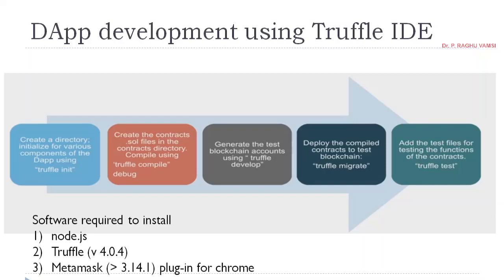Another benefit is it will also give you facility for all the dependent files by generating them at the time of setting up your project. That means while setting up the project, it will automatically generate all the related files. Skeletons of all the related files and skeleton code will be generated. The only thing is we need to replace our smart contract names in that skeleton code, thereby making the developer's task easy.